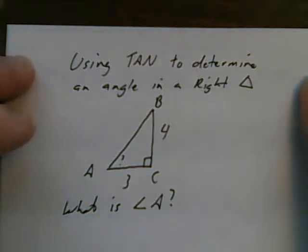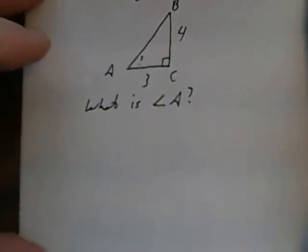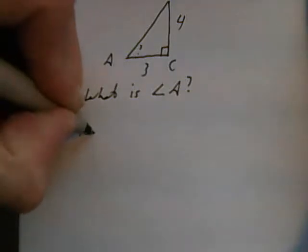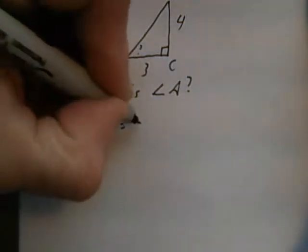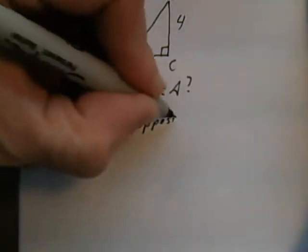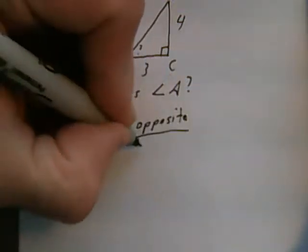I'm going to use the tangent ratio. We know the tangent of A is going to be opposite divided by adjacent.